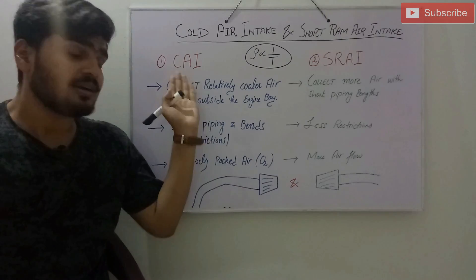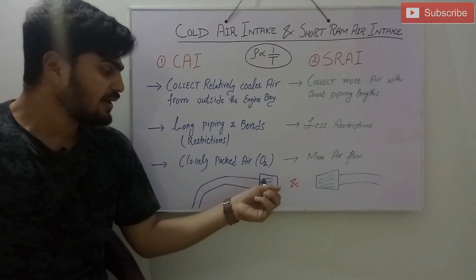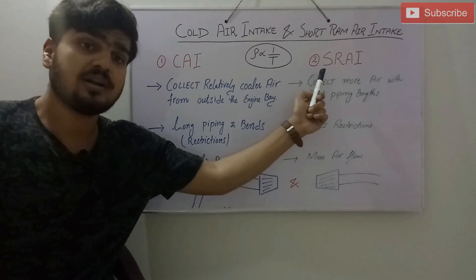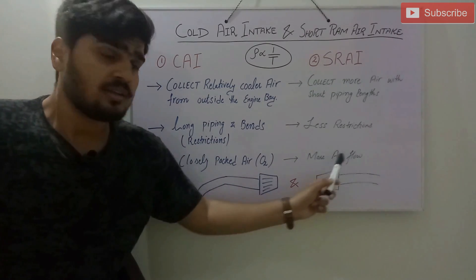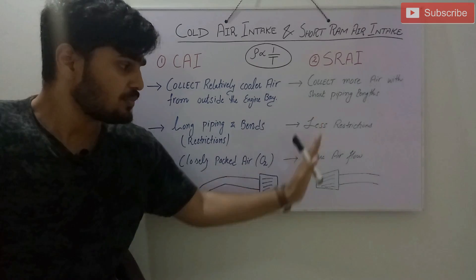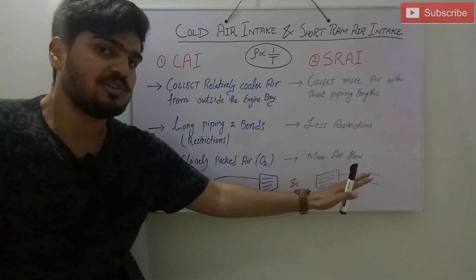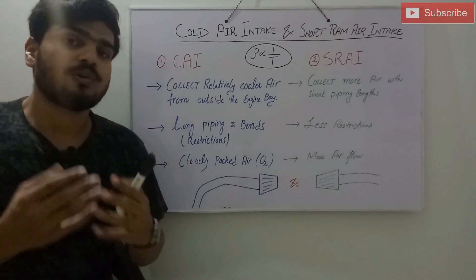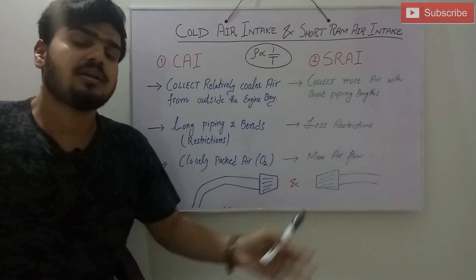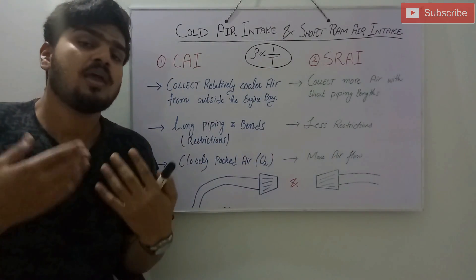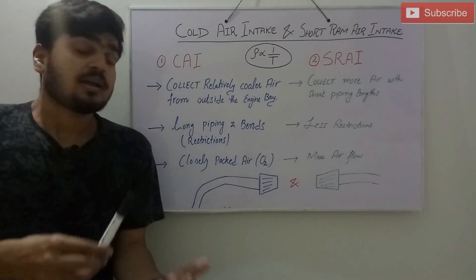In the cold air intake system there are more bends and a longer length of the intake system, whereas in the short ram air intake there is a shorter length and usually no bends. That is how both the cold air intake system and the short ram air intake system may increase your engine power.